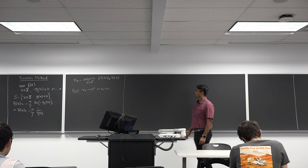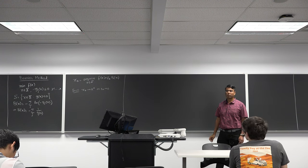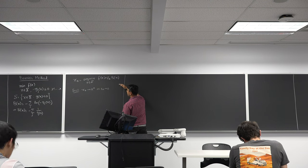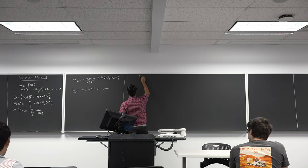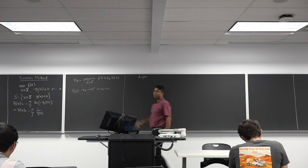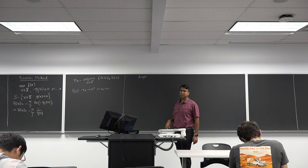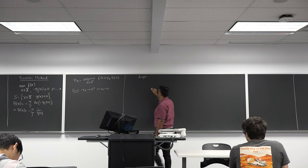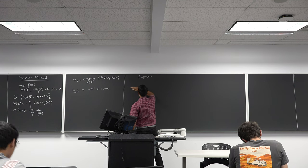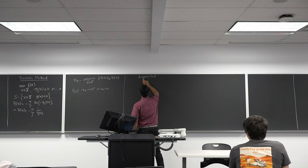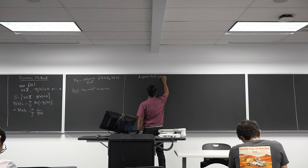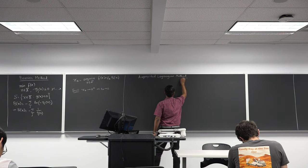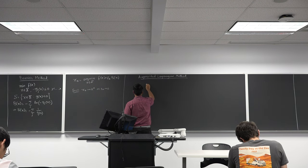The bulk of this class we will focus on the barrier method, but I also wanted to introduce another method called the augmented Lagrangian method, which is slightly different. This is the algorithm we had already seen in the previous class, so you should have all of this in your notes because I am just repeating what we did towards the end of the previous class.